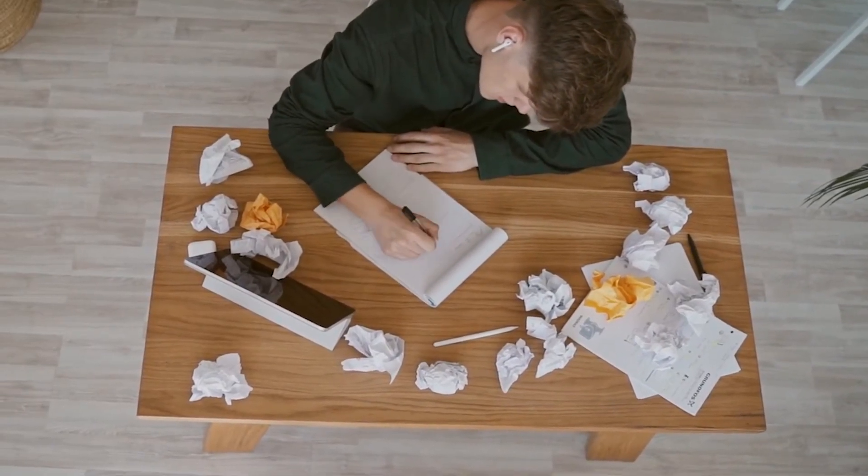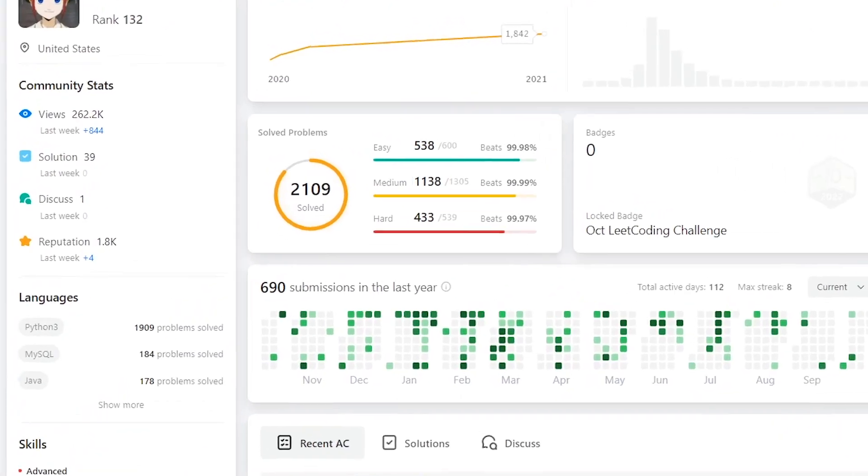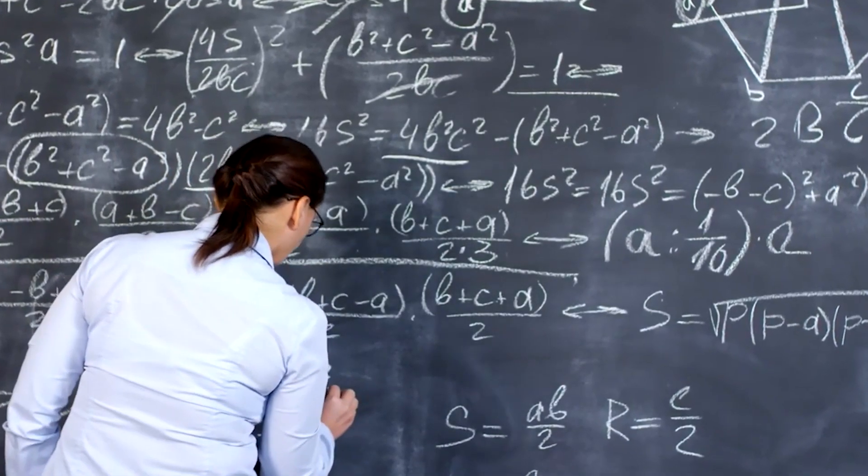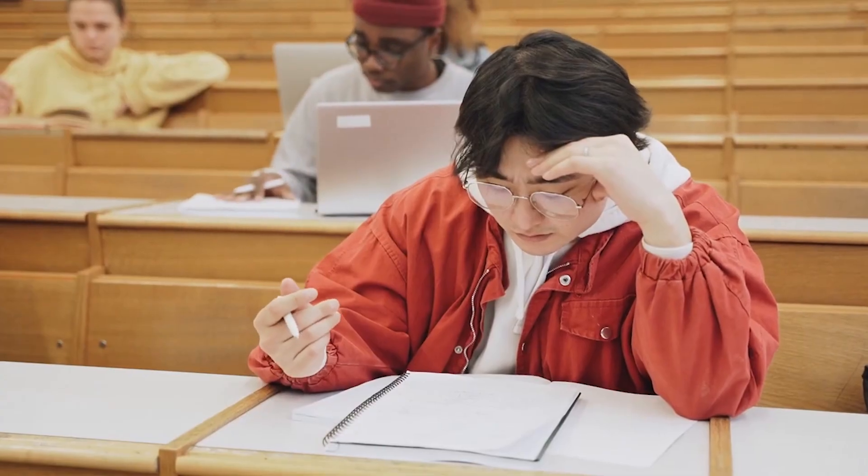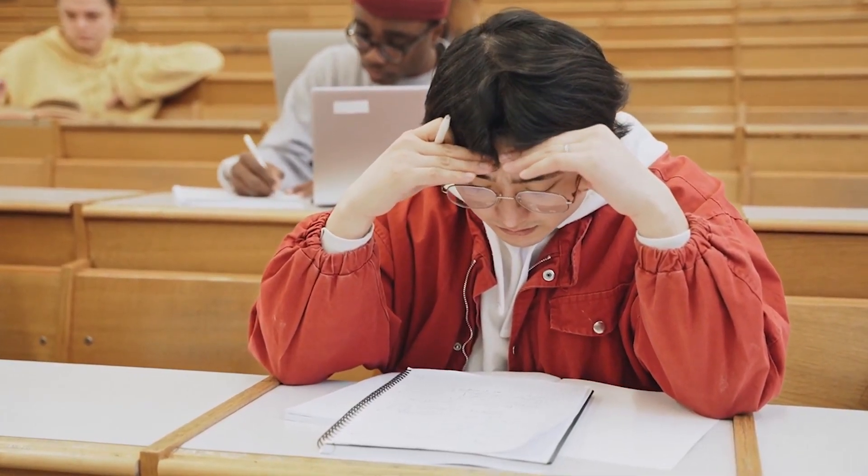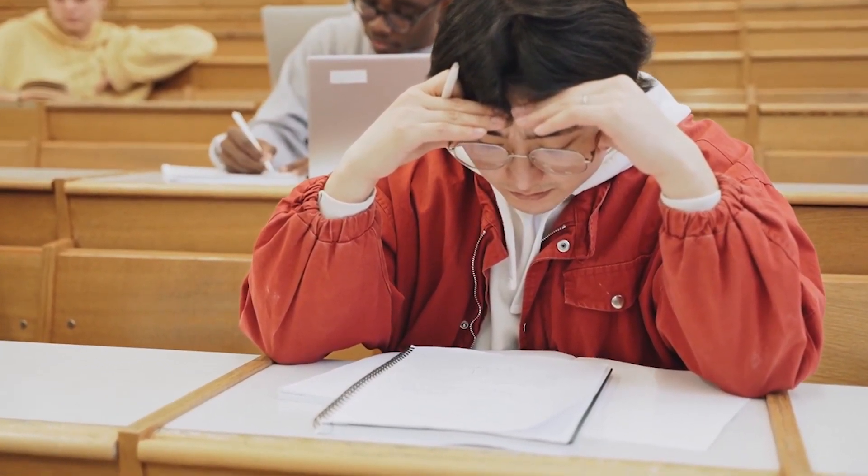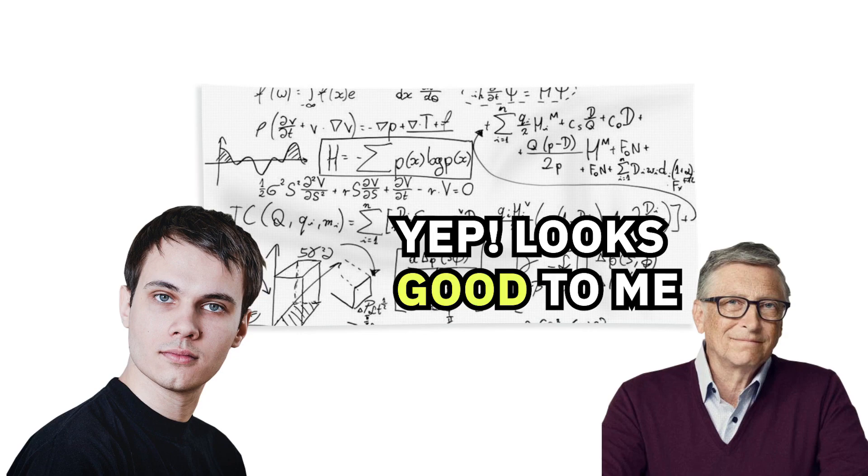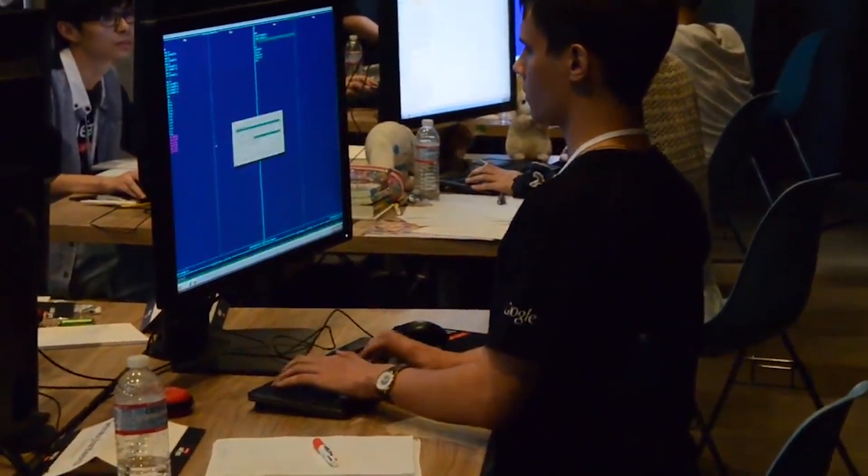Finally, the biggest mistake candidates make during interviews is not asking the interviewer for help. After all the LeetCoding you might have done, you think you're obligated to solve the question on your own. But software development is all about collaboration. Many candidates end up tunneling on one idea and waste valuable time trying to implement it when they should have asked the interviewer if the initial idea was correct or not. Before moving on to the coding, flush out your idea and then ask the interviewer if this is the right approach. Once they've confirmed it, write your code and hope for the best.